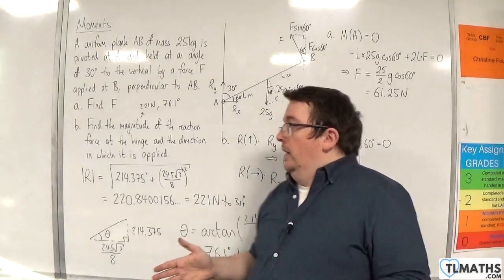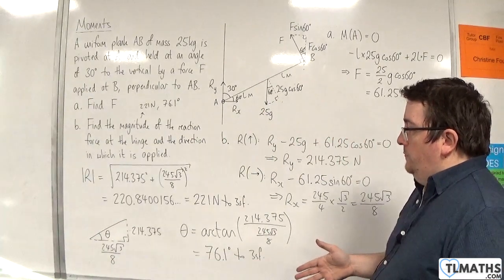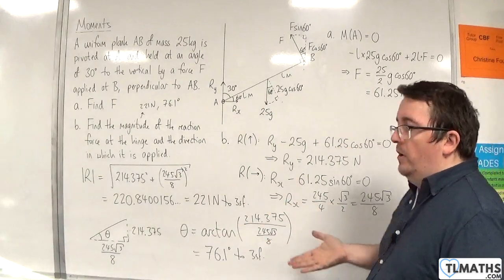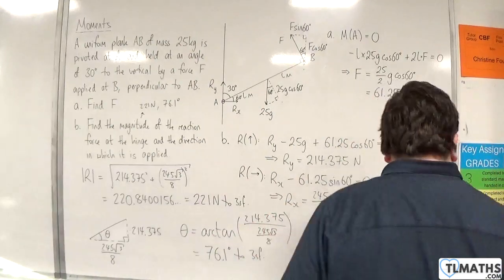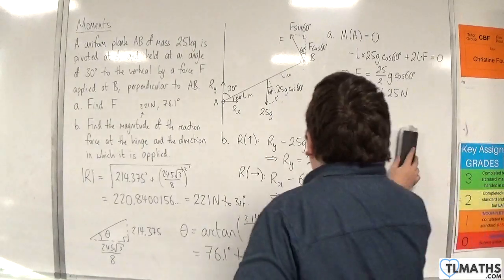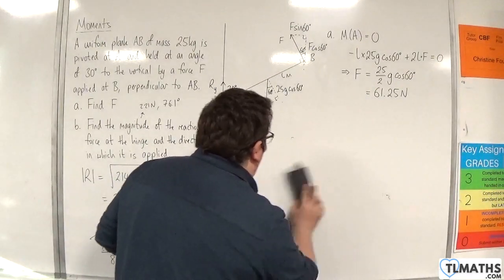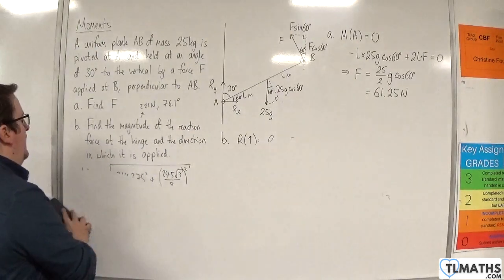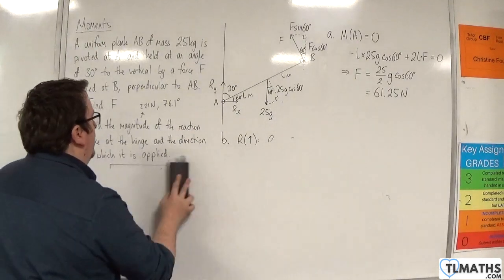I'm just going to take note of that. We had 221 Newtons and the angle is 76.1 degrees. That's one way of doing part B. Personally, that's probably the way that my brain would think about solving the problem. However, there is an alternative.